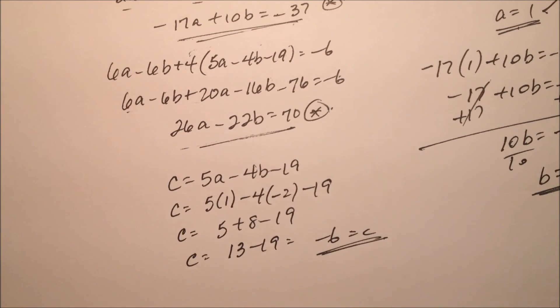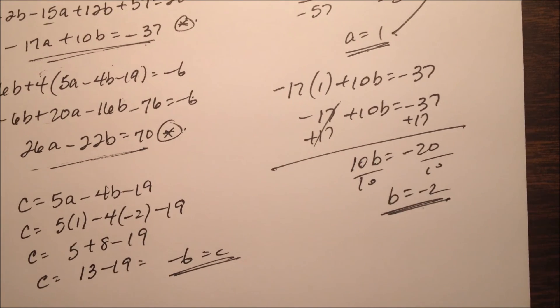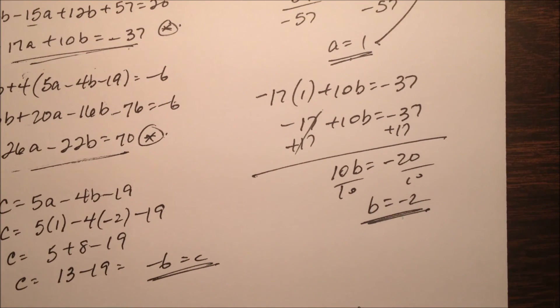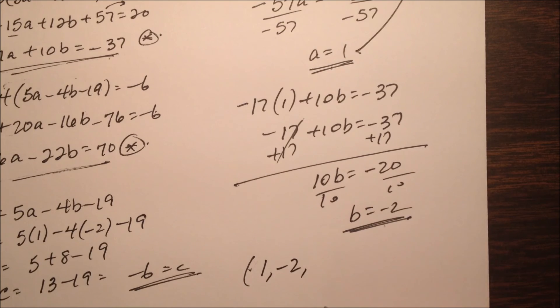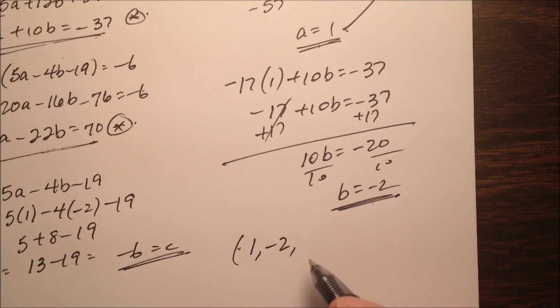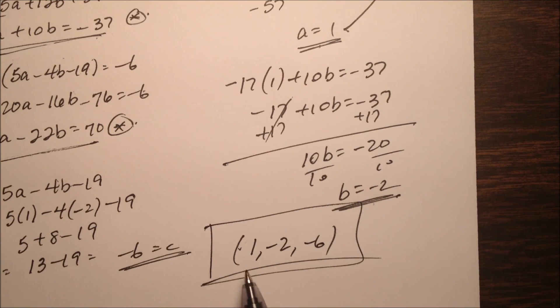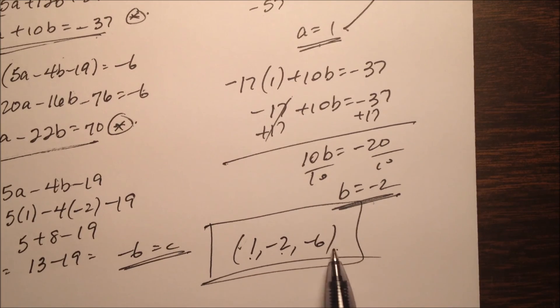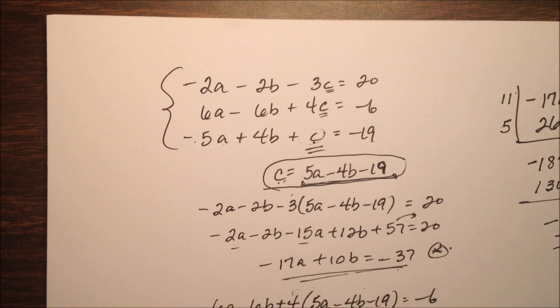So we have values here now for c as well as a and b, so I can write my solution as an ordered triplet, a, b, c. We're going to go right in alphabetical order. So a was 1, b was negative 2, and c was negative 6. So this ordered triplet, 1, negative 2, negative 6, is going to be the solution for this system of equations.